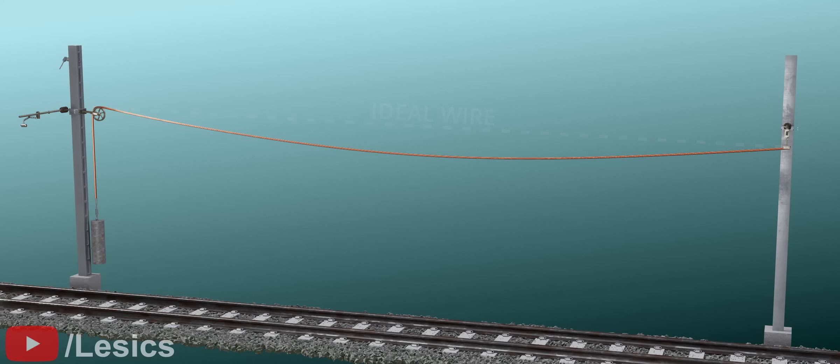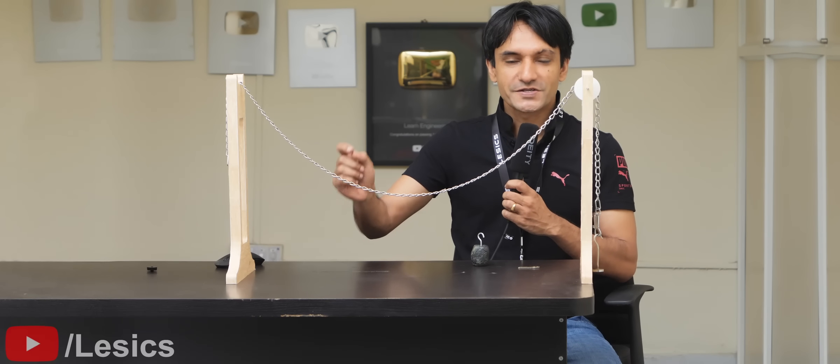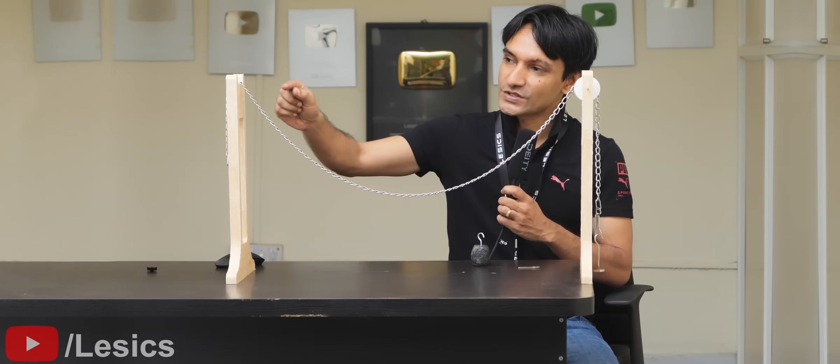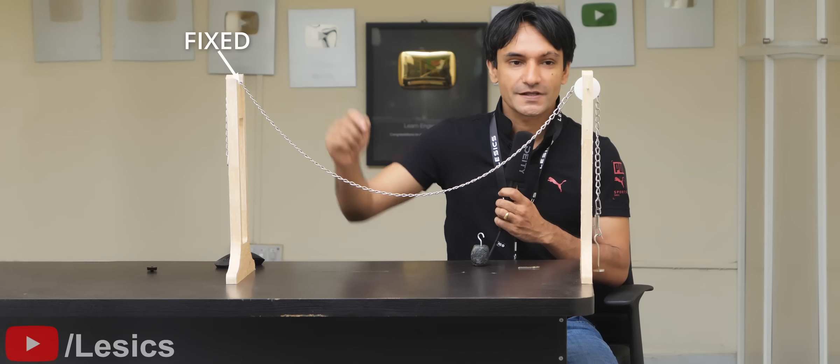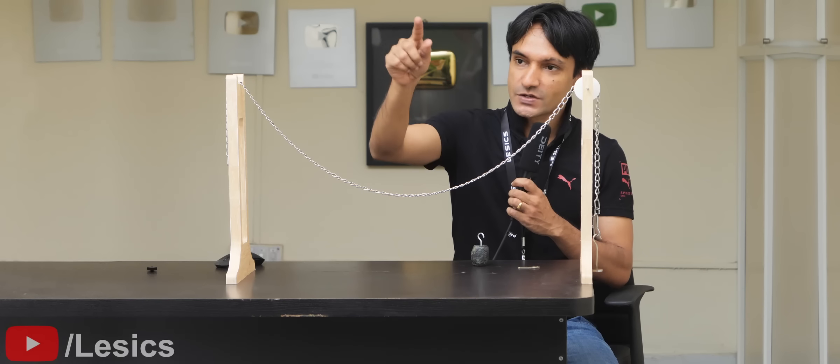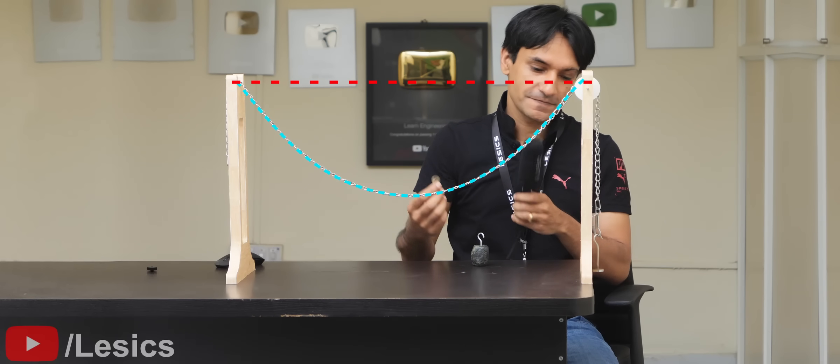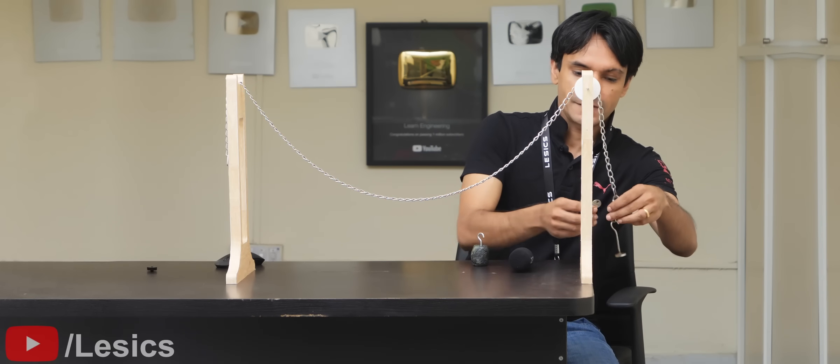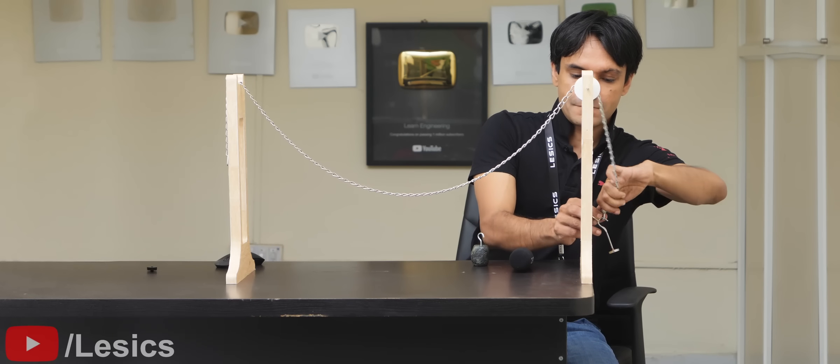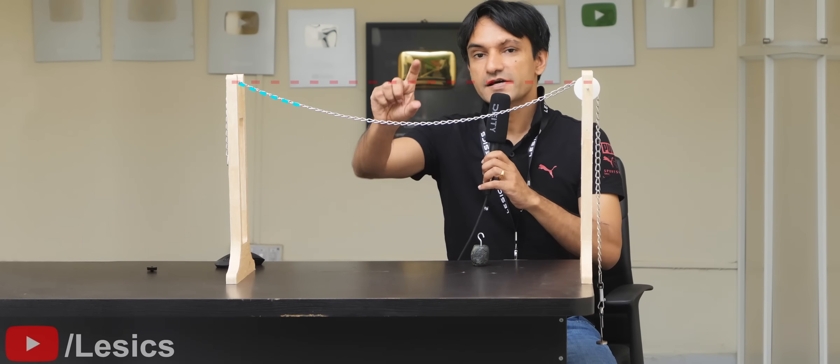Here is an easy experiment to prove it. This experimental rig is exactly same as the OHE system. One end of the cable is fixed here and other end is passing over a pulley. You can see a good sag. Let's add a weight and see what happened to the system. The sag has decreased.